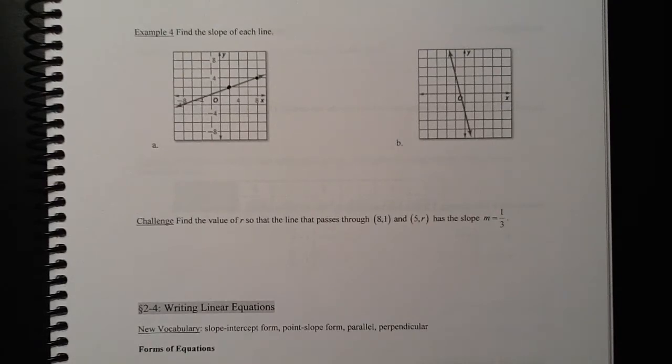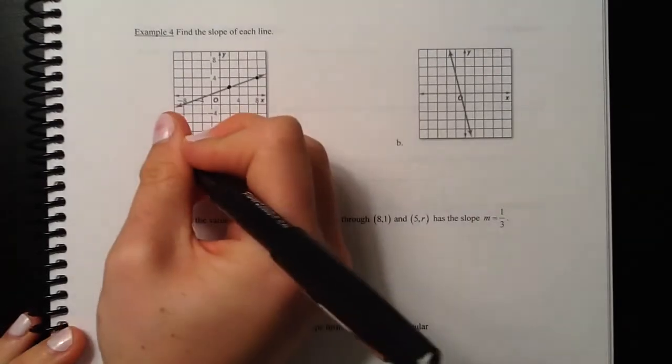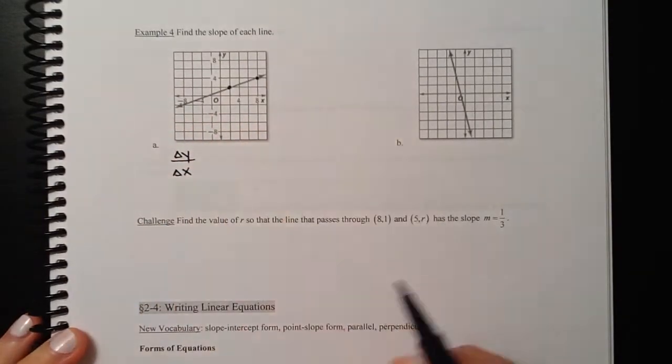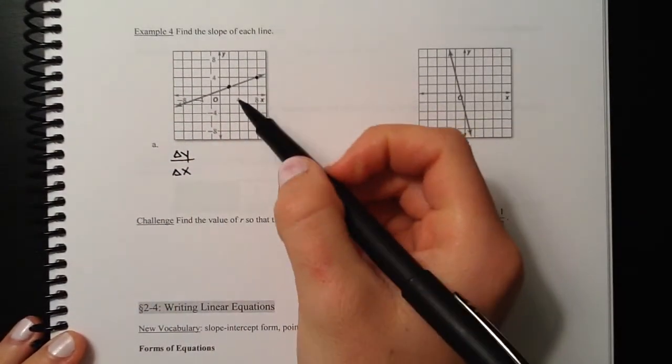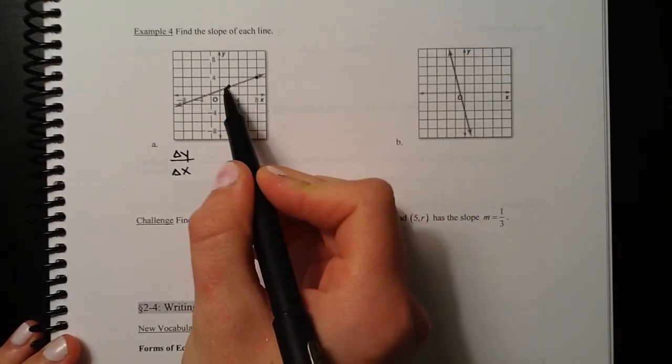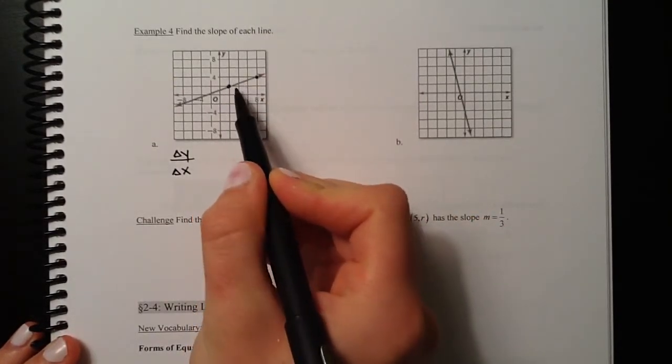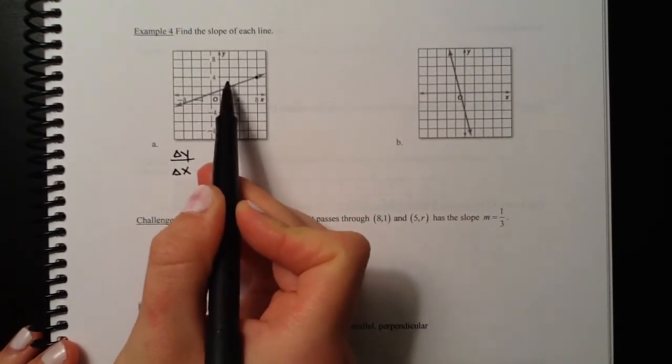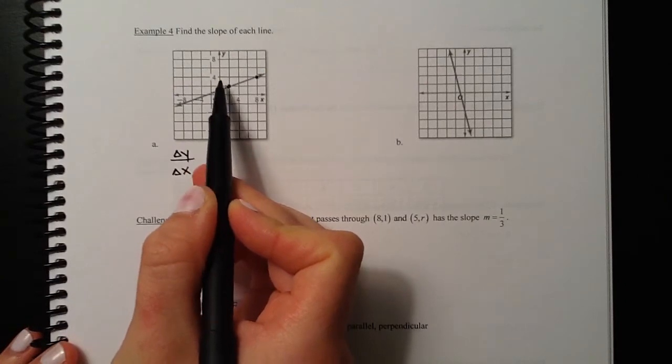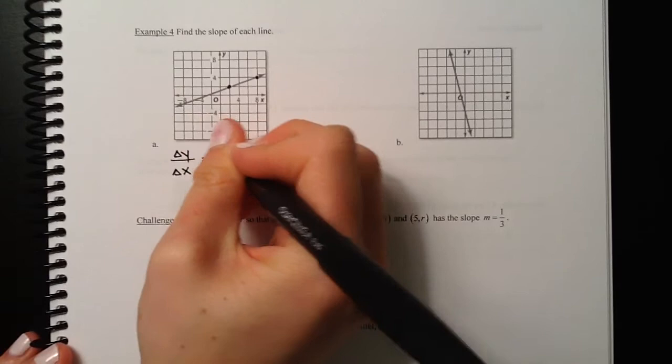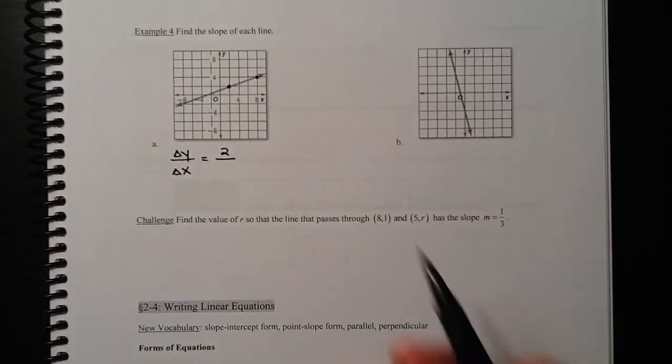When you're trying to figure out slope, you want the change in y compared to the change in x. Change in y is how many units you go up or down. From this point to this point, we go up one box, the difference between these two. But you can see on the label, this is not actually one unit. This is supposed to be two units because it's labeled as 2, 4, 6, 8. So change in y, you go up two units, which means a positive two.